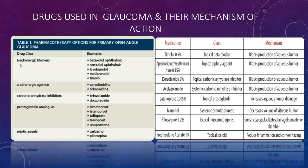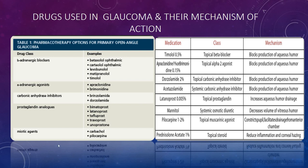The classes of drugs used in glaucoma are: beta-adrenergic blockers (e.g., timolol, metipranolol, levobunolol), alpha-adrenergic agonists (e.g., brimonidine, apraclonidine), carbonic anhydrase inhibitors (e.g., brinzolamide, dorzolamide), prostaglandin analogs (e.g., latanoprost, bimatoprost — all ending in 'prost'), and miotic agents (e.g., pilocarpine, carbachol). Remember the suffix patterns to recall drug names easily.